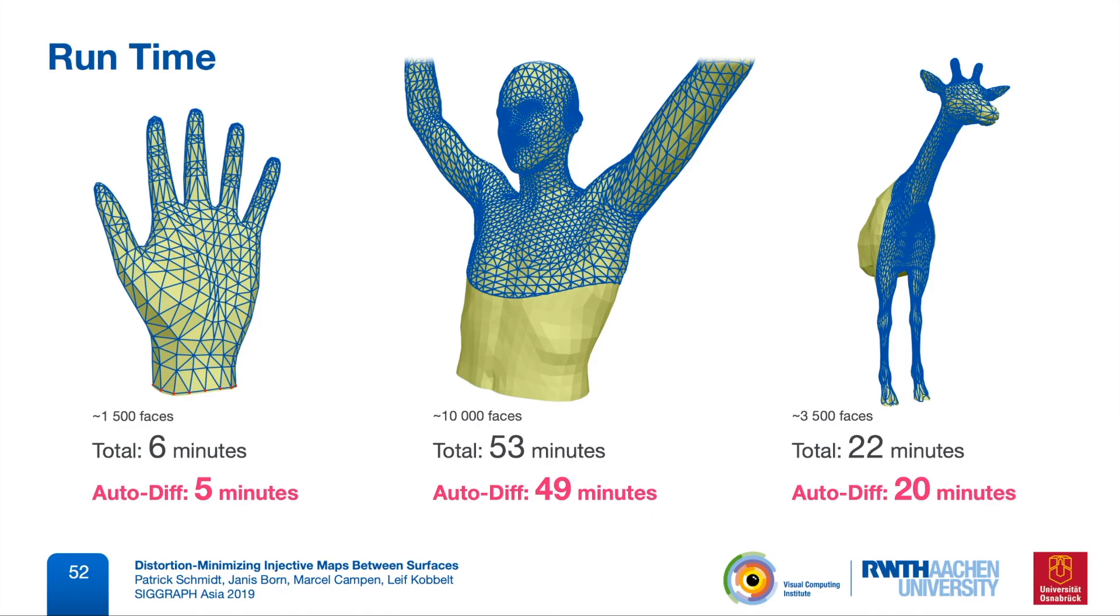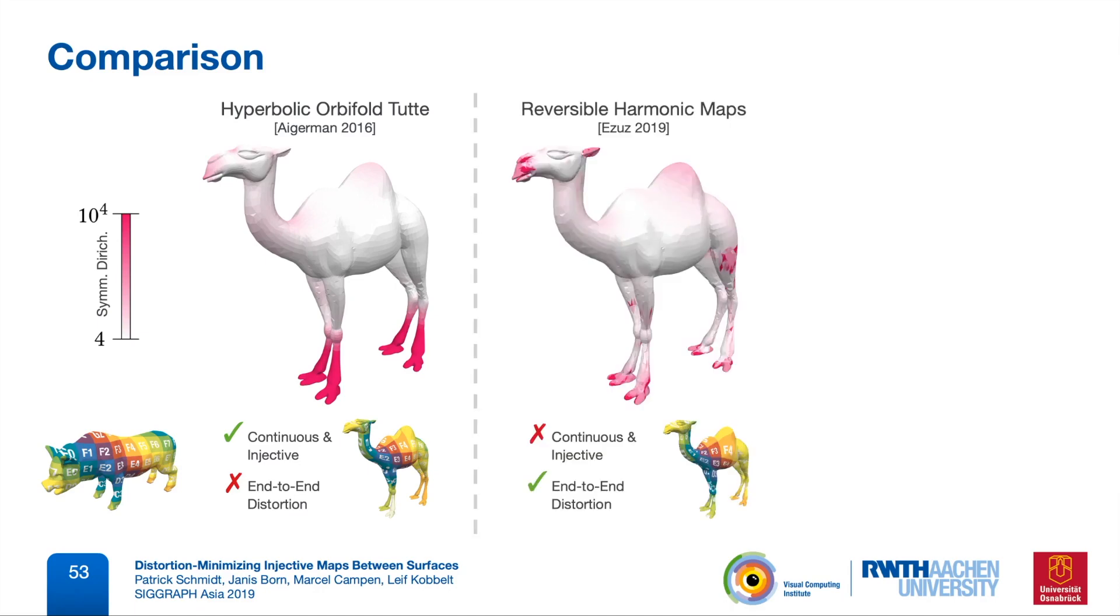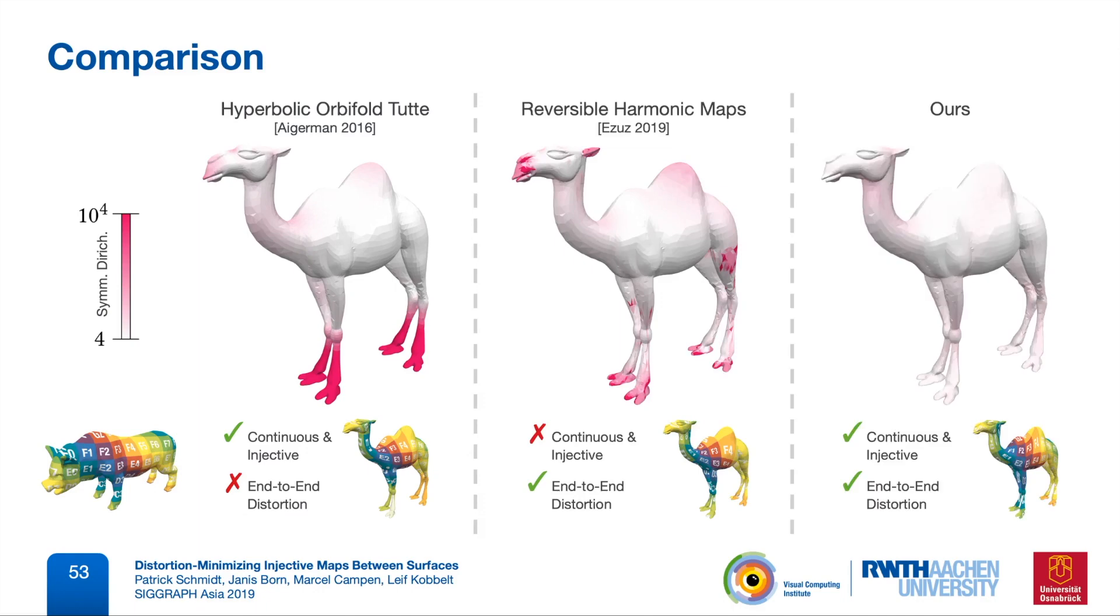We compared our results to state-of-the-art mapping methods. They either give us injectivity guarantees but without minimizing end-to-end distortion or they minimize this distortion but without guarantees. With our method, we managed to achieve both properties.